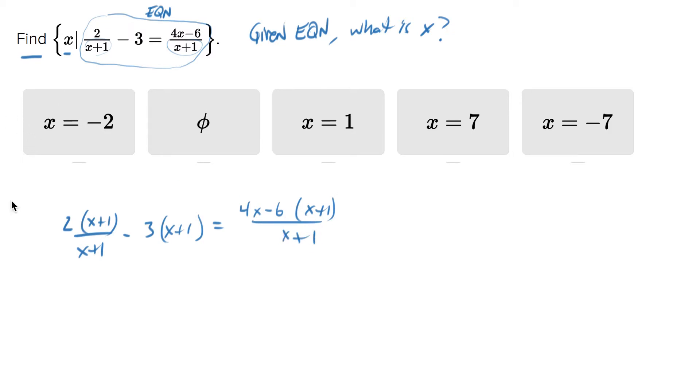And now we can cancel out a bunch of things. Cancel, cancel, cancel, cancel. And what we're left with is two minus three X minus one equals four X minus six.